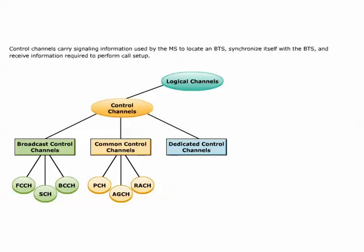All dedicated control channels, DCCH, are transmitted point to point over both downlink and uplink. Standalone dedicated control channel, SDCCH, carries signaling information during call setup. Slow associated control channel, SACCH, transmits call control data and measurement reports. Fast associated control channel, FACCH, carries urgent signaling information.